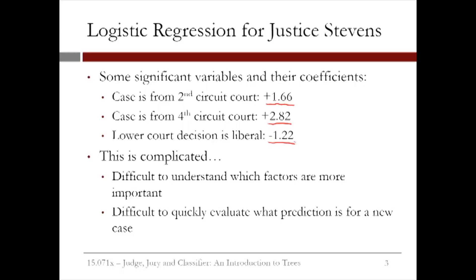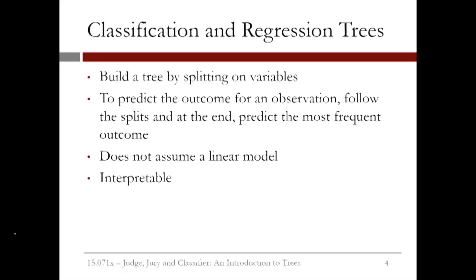While this tells us that the case being from the 2nd or 4th circuit courts is predictive of Justice Stevens reversing the case, and the lower court decision being liberal is predictive of Justice Stevens affirming the case, it's difficult to understand which factors are more important due to things like the scales of the variables and the possibility of multicollinearity. It's also difficult to quickly evaluate what the prediction would be for a new case. So instead of logistic regression, Martin and his colleagues used a method called classification and regression trees, or CART.